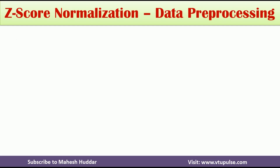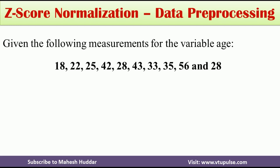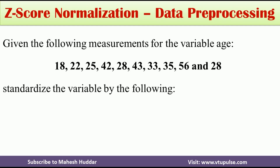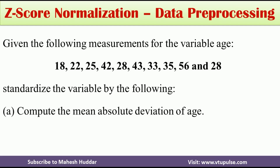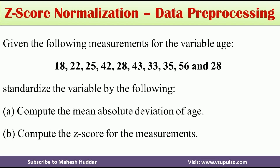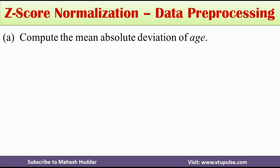We will take a simple example to understand z-score normalization using an age column dataset. We will do two things: first, calculate the mean as well as the mean absolute deviation, and then calculate the z-score for each of these values.